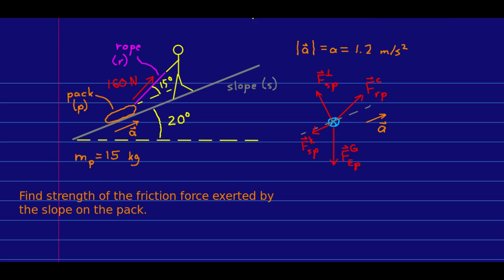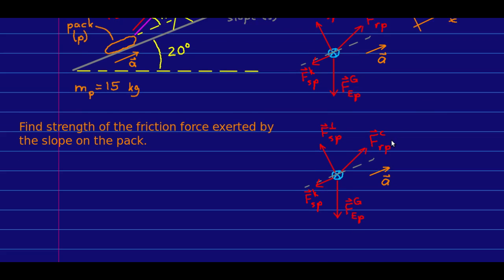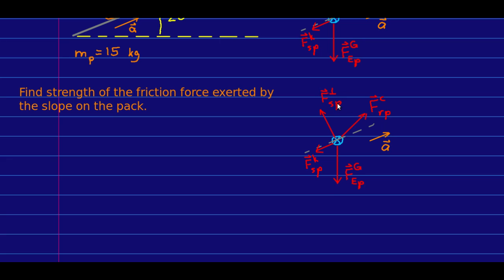The first thing I should do is define some axes. A piece of advice I've given before is that you should always define your axes so that one axis points in the direction of your acceleration if you know the direction of the acceleration. And in this case, that's up the slope. And so I am going to point my x-axis up the slope and my y-axis perpendicular to the slope. Now the next thing I'm going to do before working any further is I'm going to simplify my notation somewhat.